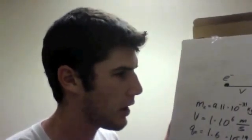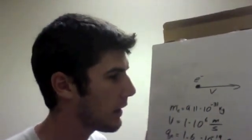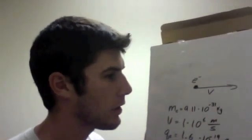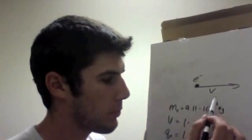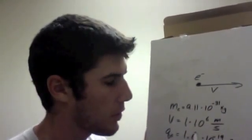Hey guys, so today we're going to be finding the kinetic energy and voltage of an electron moving at speed v, which is 1 times 10 to the 6 meters per second.